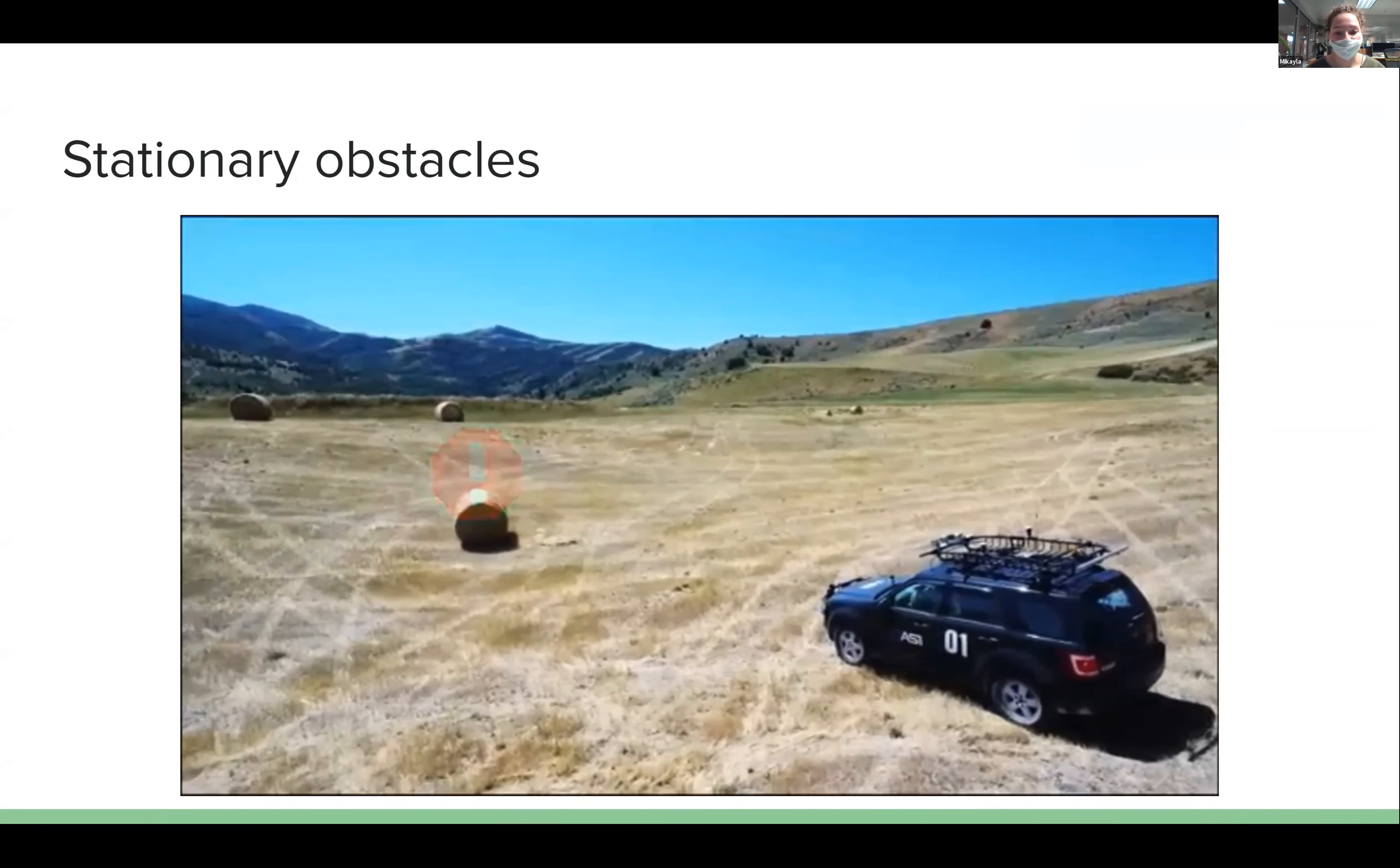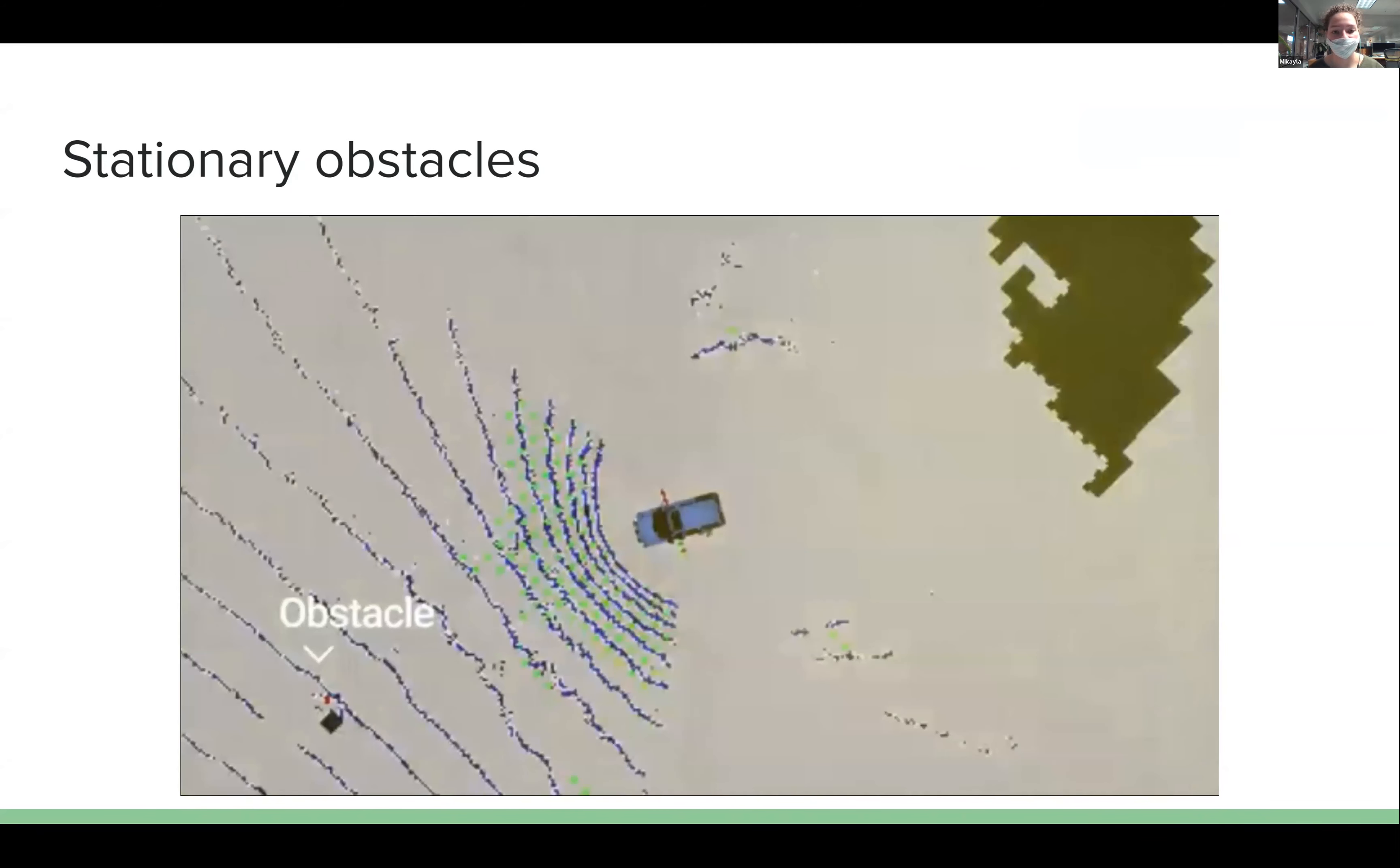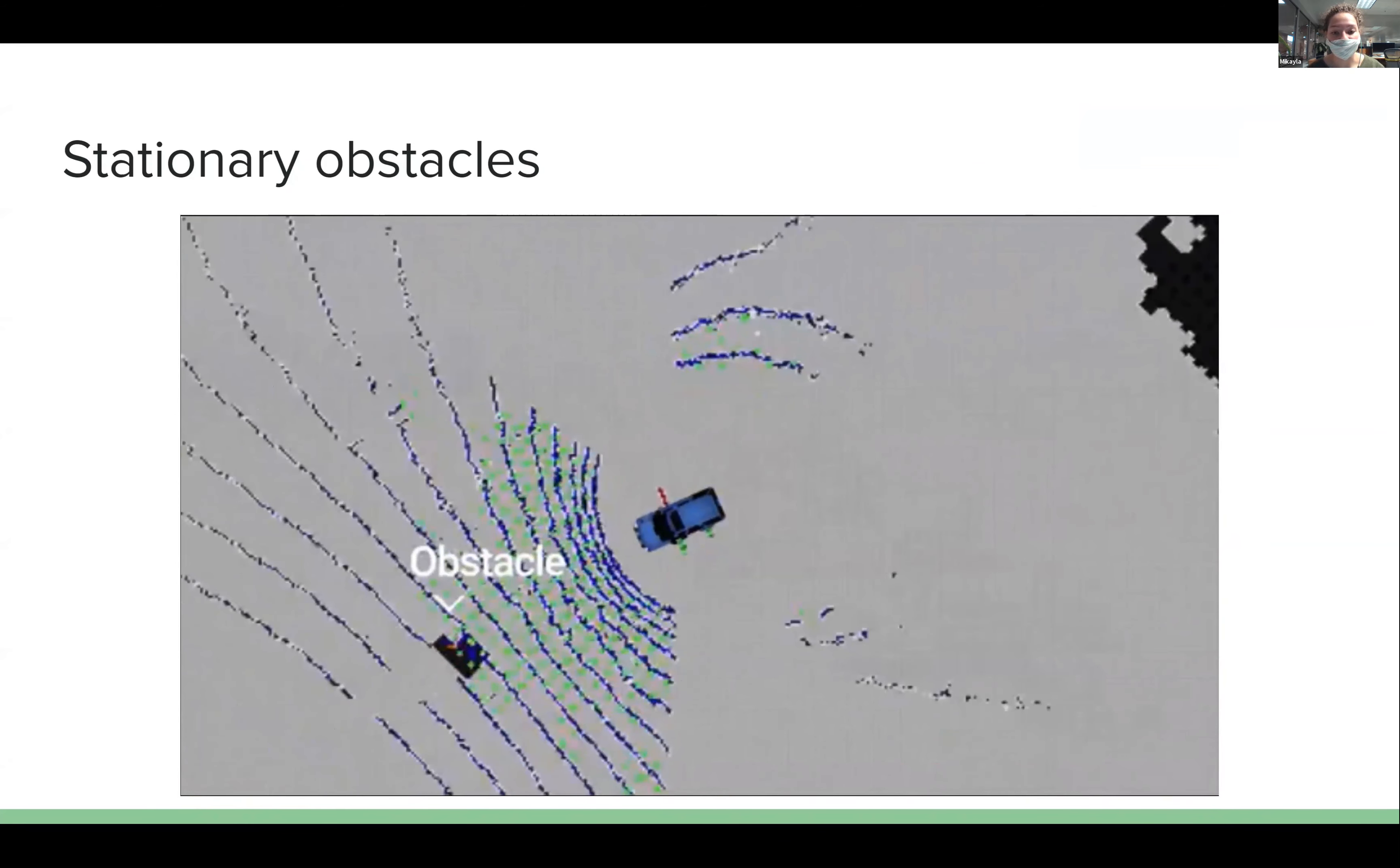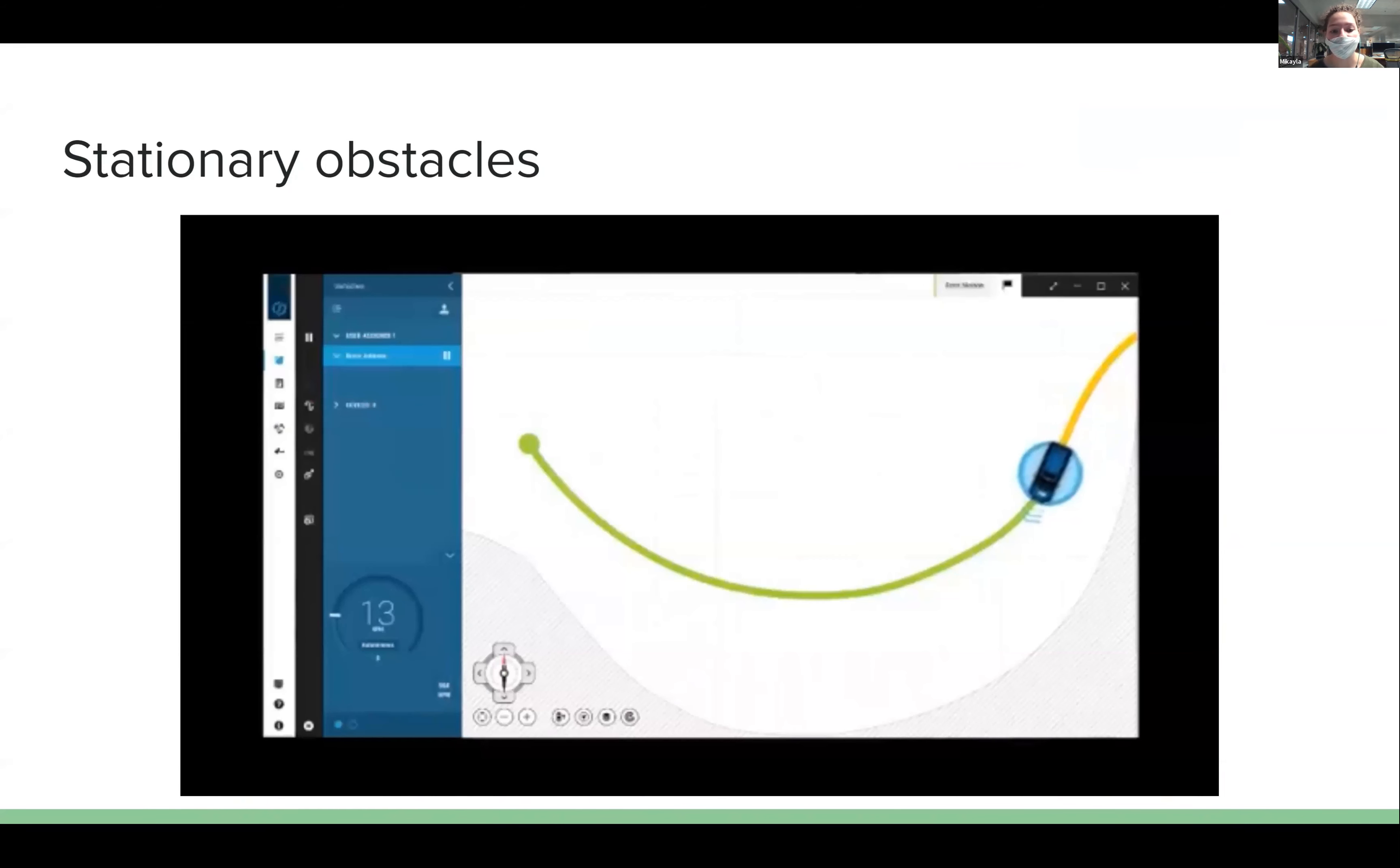However, they need to test this. So currently they just drive around and they'll sense stationary objects, as you can see in the video here. But that means that once it's sensed, they have to go out there physically to move the object or they have to reroute their software to steer around the obstacle. This is pretty time consuming.